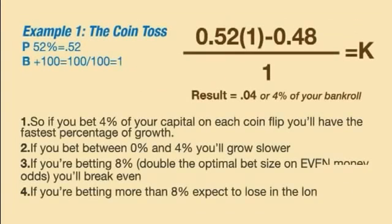Example 1: the coin toss. Let's say you have a weighted coin that will come up heads 52% of the time and someone offers you even money odds on the call. So P is .52, B is 1, and K comes to .04, or 4% of your bankroll. If you bet 4% of your capital on each coin flip, you'll have the fastest percentage of growth.